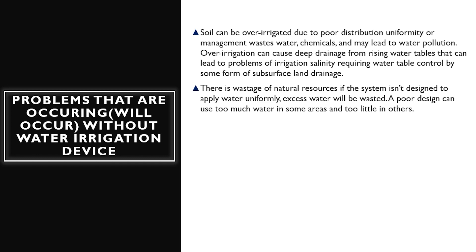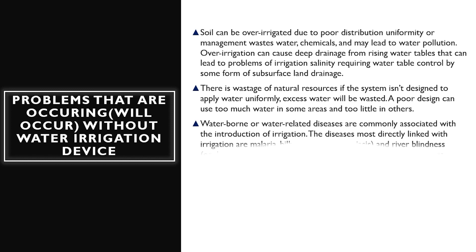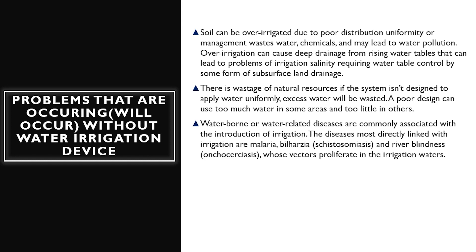There is waste of natural resources if the system isn't designed to apply water uniformly. A poor design can use too much water in some areas and too little in others. Waterborne or water-related diseases are commonly associated with the introduction of irrigation. The diseases most directly linked with irrigation are malaria, bilharzia, and river blindness, whose vectors proliferate in irrigation waters.